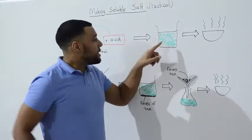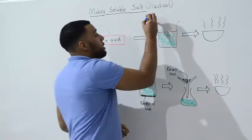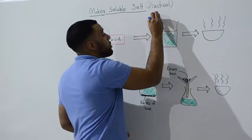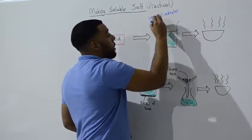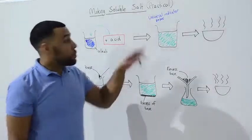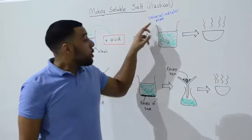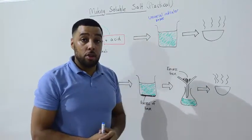We can test when neutralisation has occurred by using universal indicator paper. The universal indicator paper will go green when neutralisation has occurred.